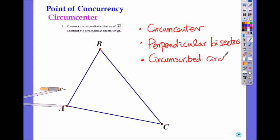Circumscribed circle. And guess what? It is equidistant from what? All vertices.